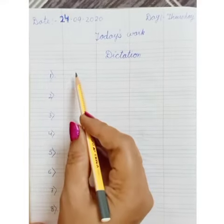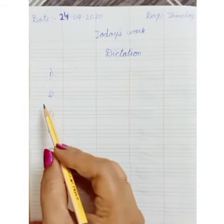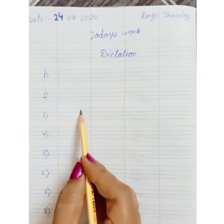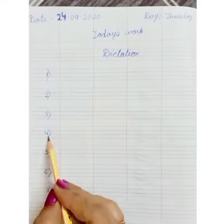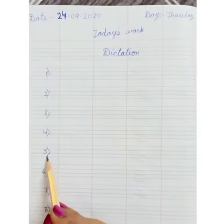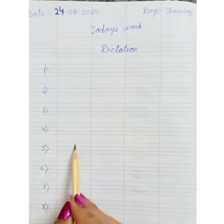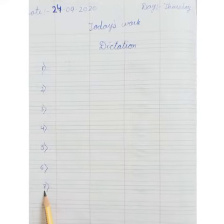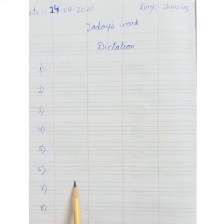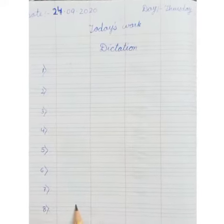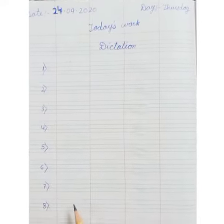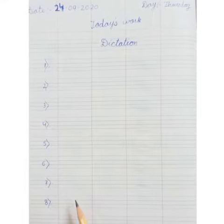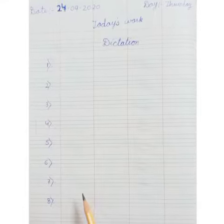Number 1 is I. Number 2 is F. Number 3 is K. Number 4 is A. Number 5 is C. Number 6 is H. Number 7 is N. Number 8 is L. So respected parents, kindly give maximum practice of dictation to your ward.